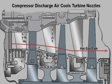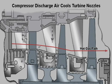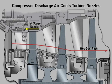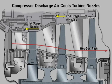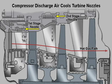Compressor discharge air is directed internally through the partitions of the first and second stage turbine nozzles to provide nozzle cooling.